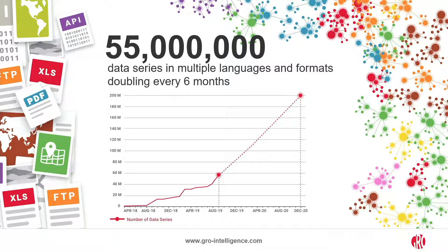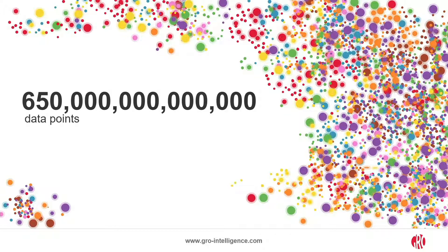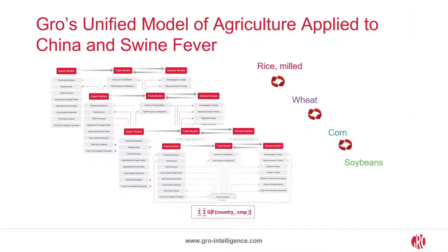Putting all this together, we currently have about 55 million data series, and this number is doubling every six months — we expect it to reach about 200 million by the end of next year. These 55 million data series contain 650 trillion data points.